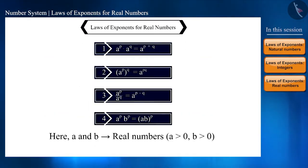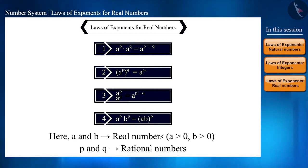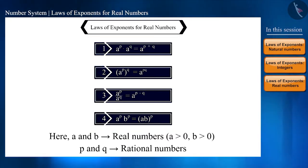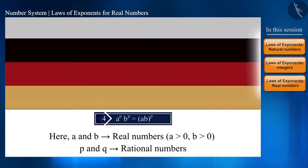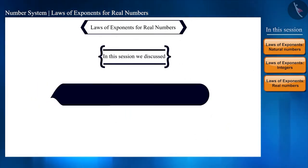We can now define the laws of exponents: if a and b are positive real numbers and p and q are rational numbers, the laws remain the same and are applicable in the same manner as for natural numbers. That's it for today — in this session we discussed the laws of exponents for real numbers.